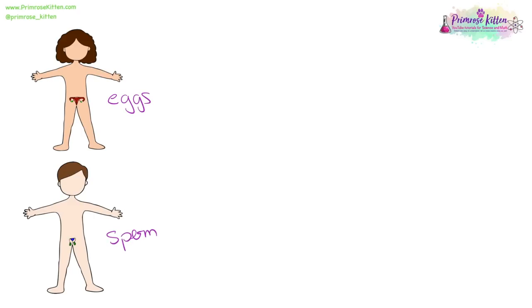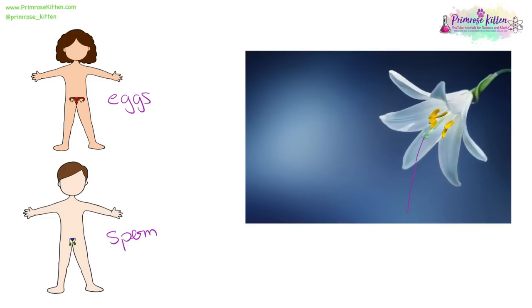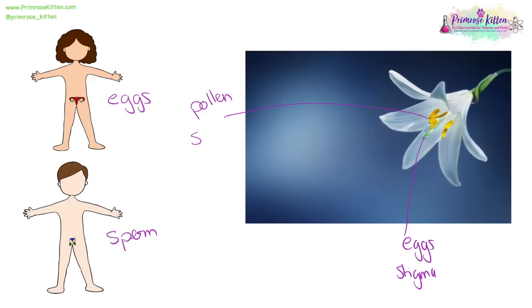In women the gametes are eggs, and in men the gametes are sperm. In a plant we have eggs still, located in the stigma, and the male gametes in plants are pollen, found on the stamen.